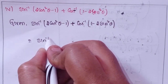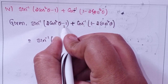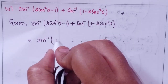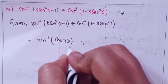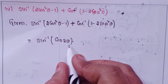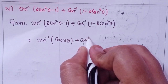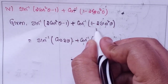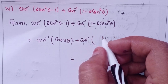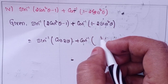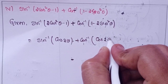Sin inverse of 2 cos²θ minus 1 — can I write this in terms of cos? That means cos 2θ. Plus cos inverse of (1 minus 2 sin²θ) — I will write this in terms of cos, which means cos 2θ.